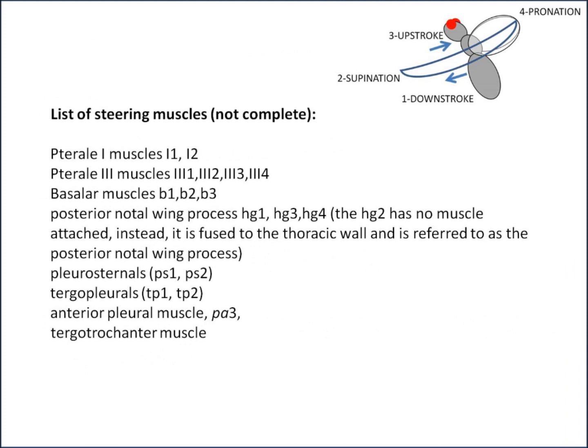Moving on to the steering muscles — I don't have a complete list, but do feel free to add to them in the comments. The first ones are the Terrel 1 muscles, 1 and 2; the Terrel 3 muscles, 1, 2, 3, and 4; the basilar muscles B1, B2, and B3; and the posterior notal wing process, HG1, HG3, and HG4. There is officially an HG2, but it has no muscle attached — instead it's fused to the thoracic wall and referred to as the posterior notal wing process.